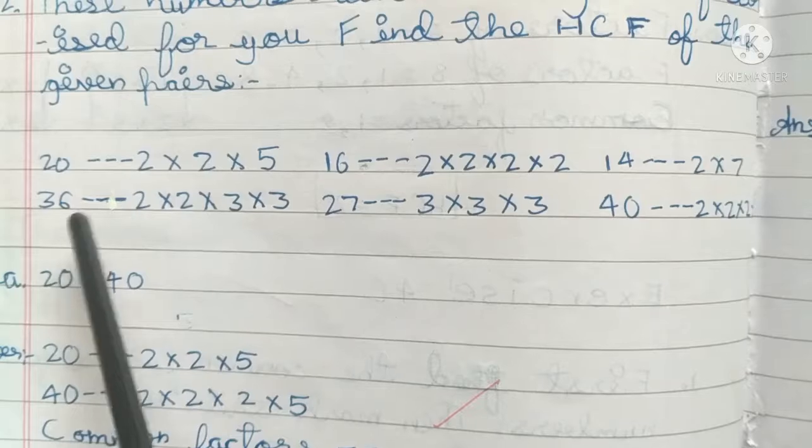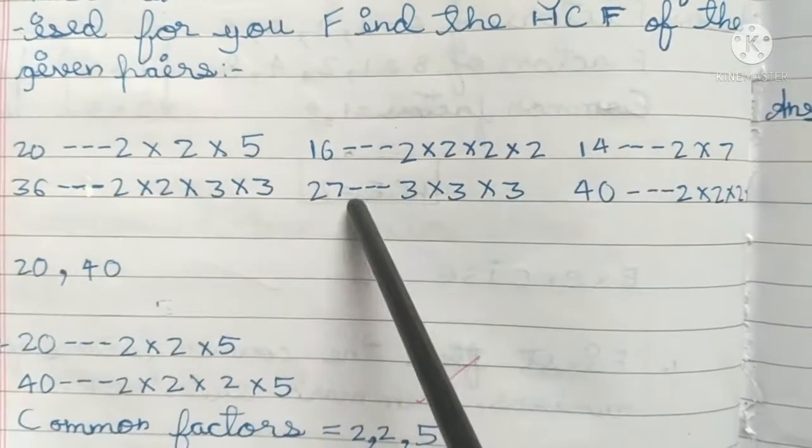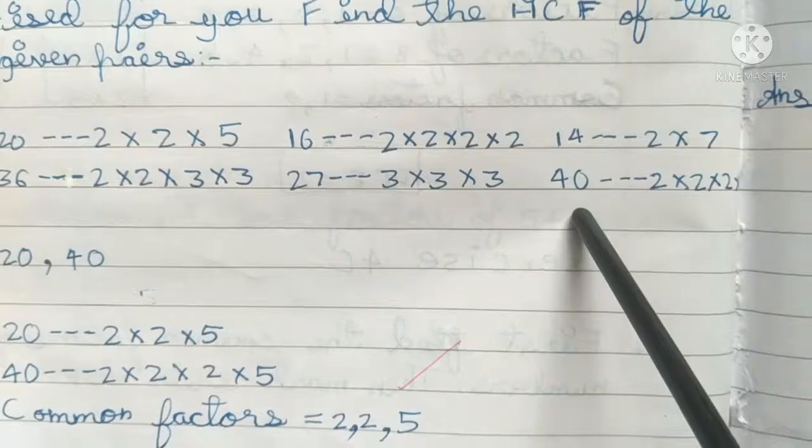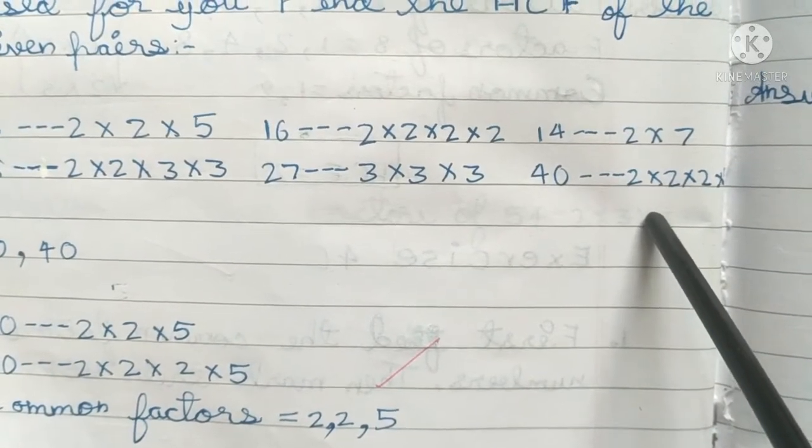36 is 2×2×3×3; 27 is 3×3×3; 40 is 2×2×2×2×5.